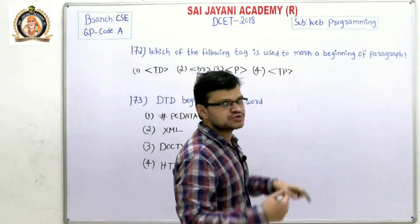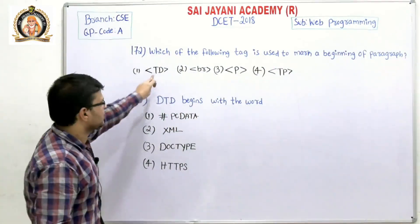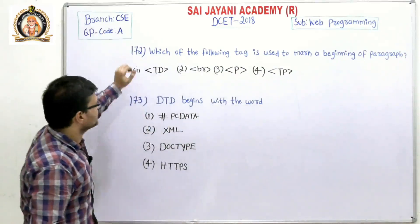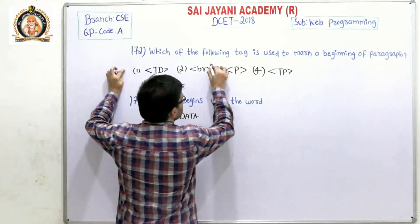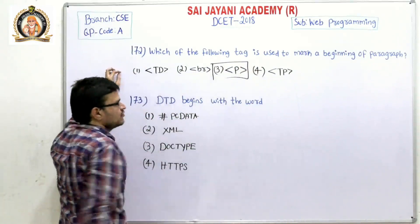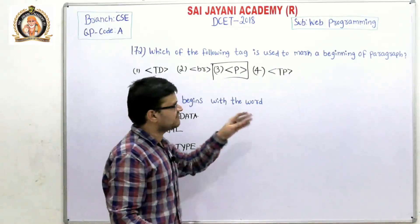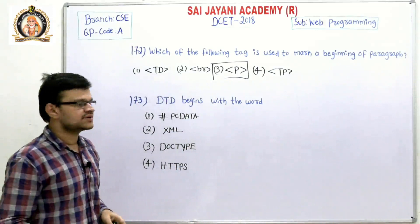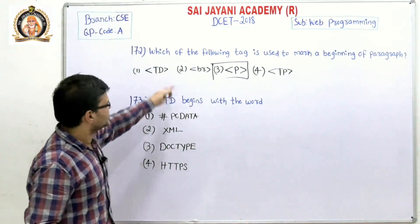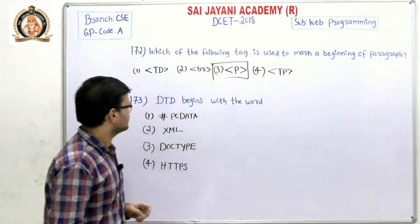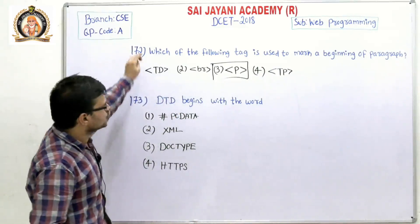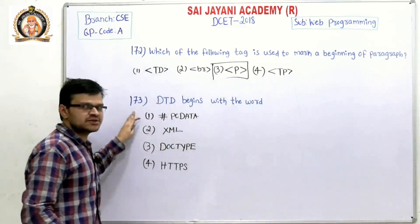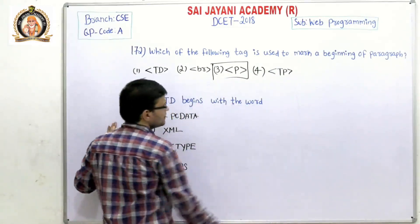Question number 172: Which of the following tags is used to mark the beginning of a paragraph? We have four options: td tag, br tag, p tag, and tp. For question number 172, the third option, p tag, is the right answer. The p tag is used to define a paragraph; the br tag defines a line break; and the td tag defines a column of a cell in a table.